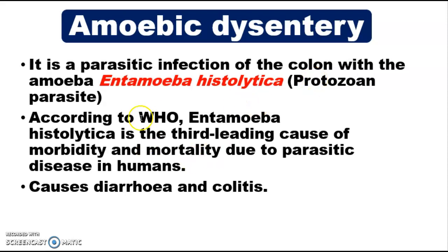According to the WHO, Entamoeba histolytica is the third leading cause of morbidity — meaning the number of disease cases in a population — and mortality, meaning death rate, due to parasitic disease in humans. It causes diarrheal disease and colitis, which means stomach ache.